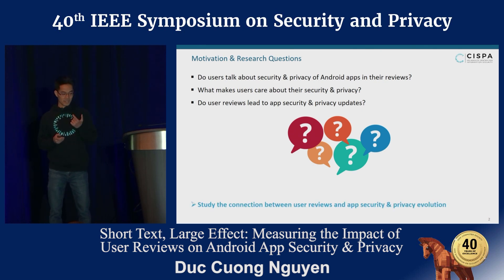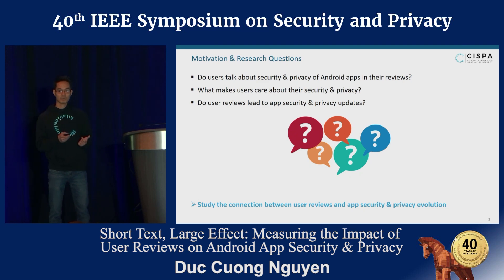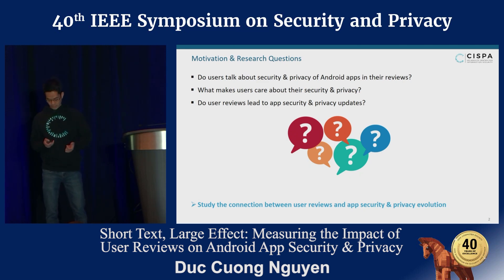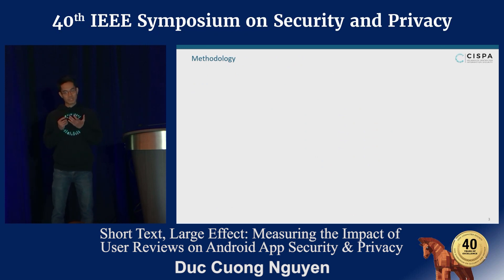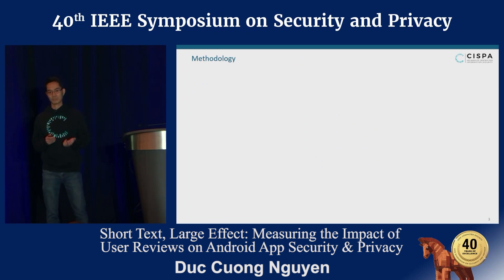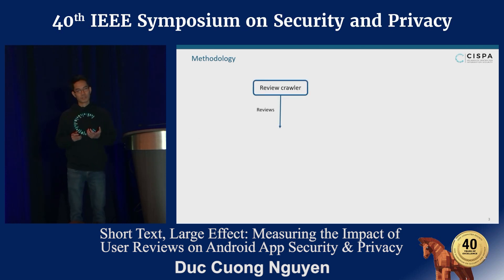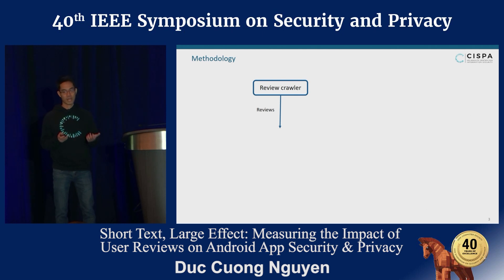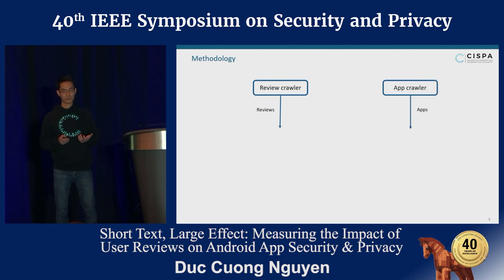To answer these three questions, we aim to study the correlation between user reviews and Android app security and privacy evolution. I'm going to give you an overview of our approach, and later I will explain each component in detail. We start with a crawler that crawls all app reviews and app version history — by version history, I mean we download all app releases.